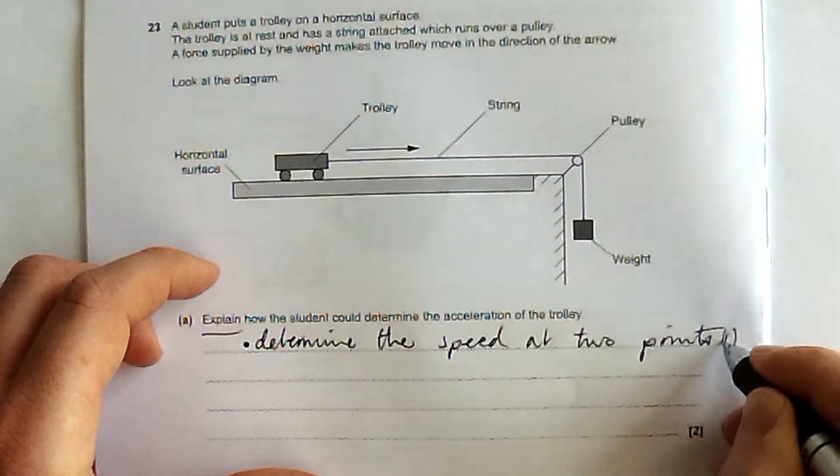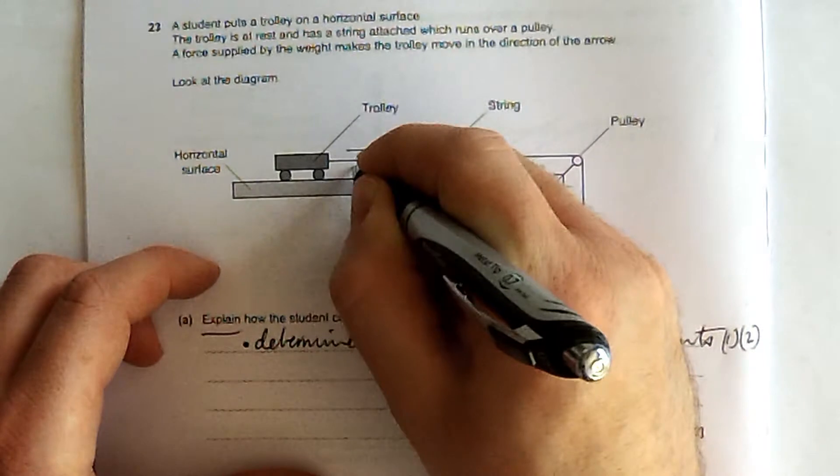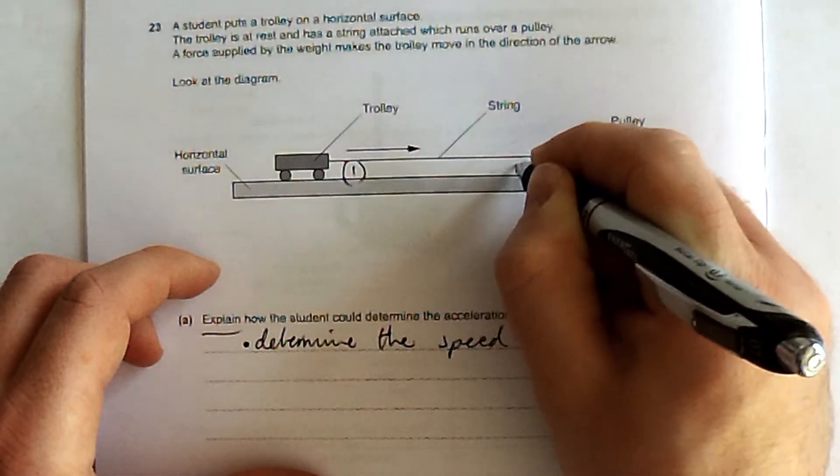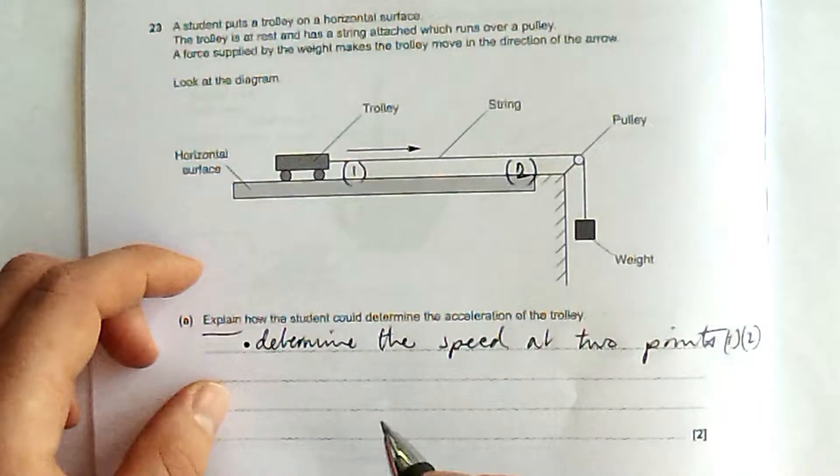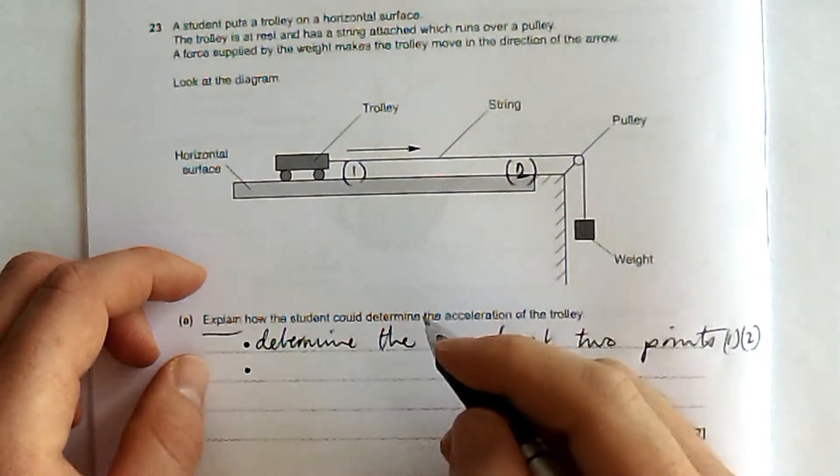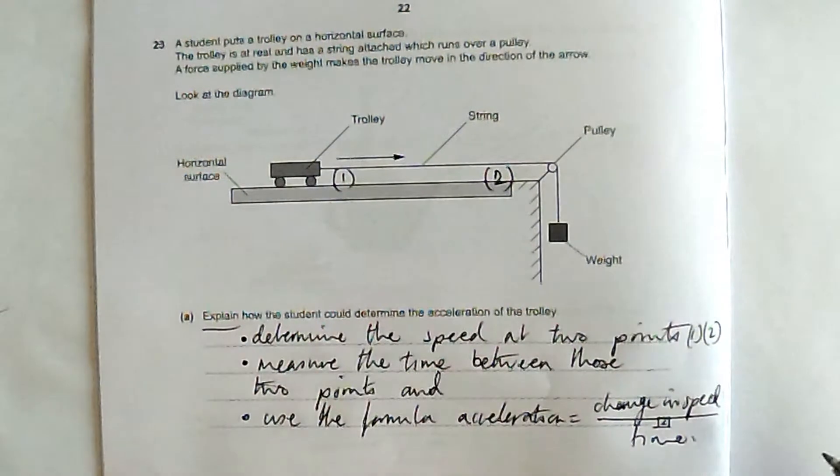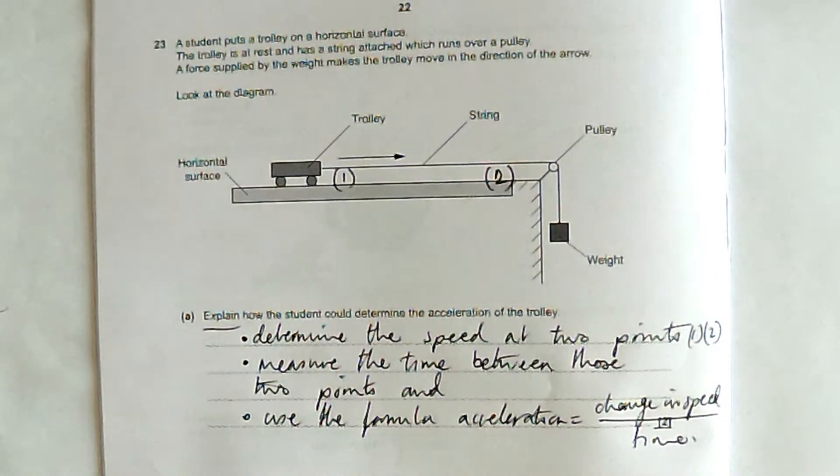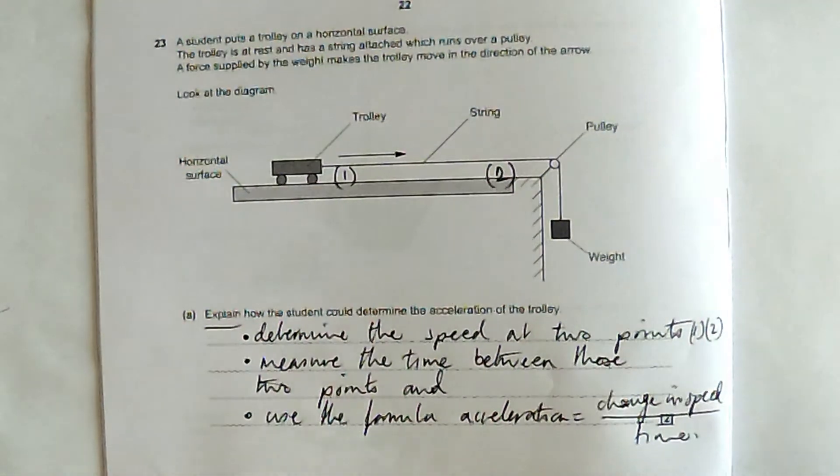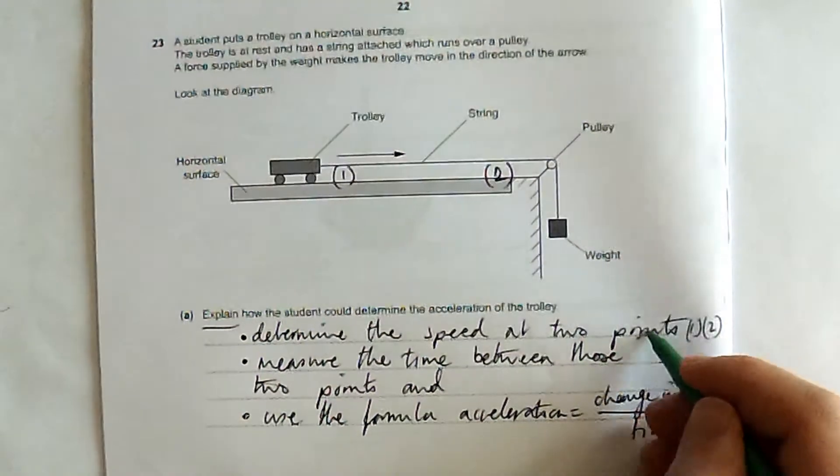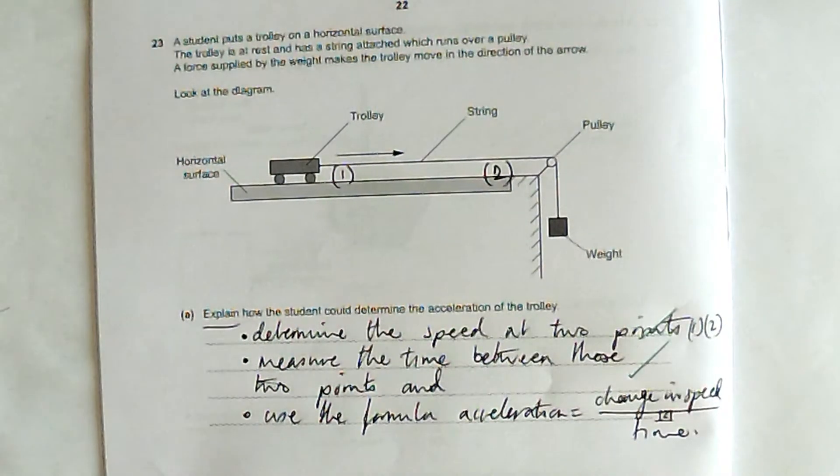You don't need to do this, but I'm just going to put them on there as one and two. Determine a speed here and a speed here as well. And measure the time in between them and use the formula change in speed over time. Now in practice that is not the way that I would do that. There is instantly two marks and any of those three points, any two of those three points will get you two of those marks.